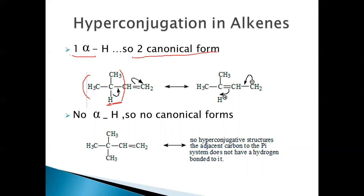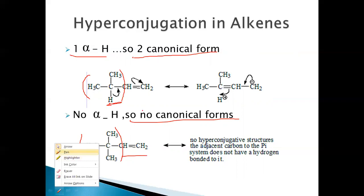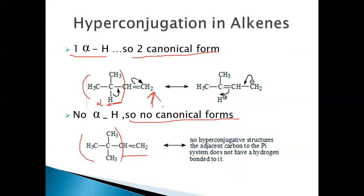For the isopropyl group attached to an unsaturated system, there is only one alpha hydrogen and two canonical forms. When a tertiary butyl group is attached, there are no alpha hydrogens, so no canonical forms and no hyperconjugation is possible. Thus, as the number of alpha hydrogens decreases, the number of canonical forms decreases. The alpha hydrogen is an electron-releasing group, releasing electrons into the system — this is a +I type effect.